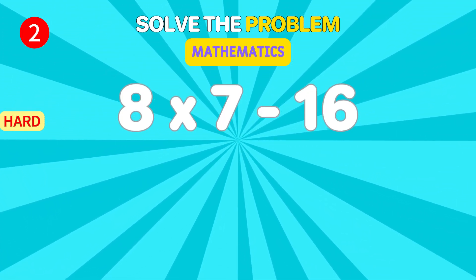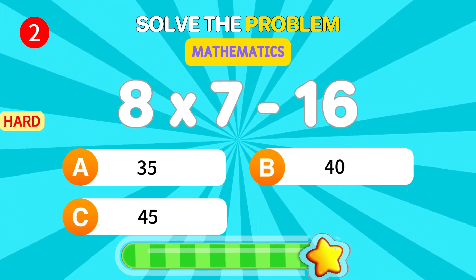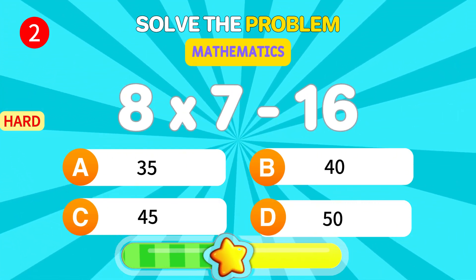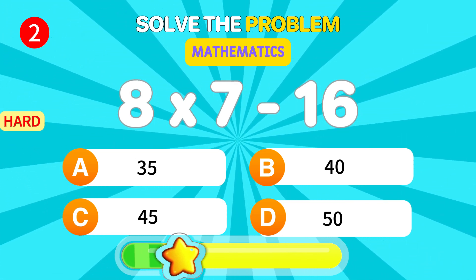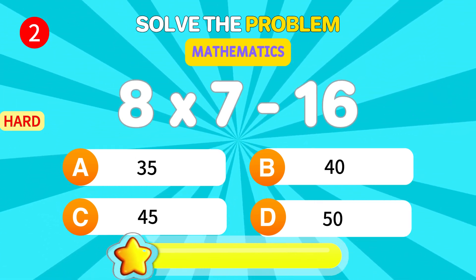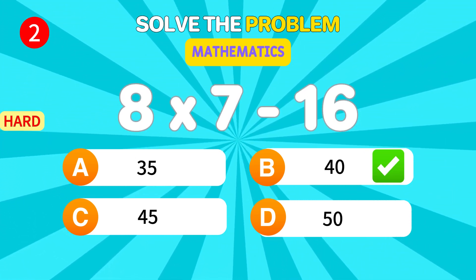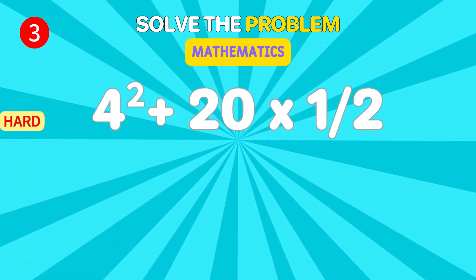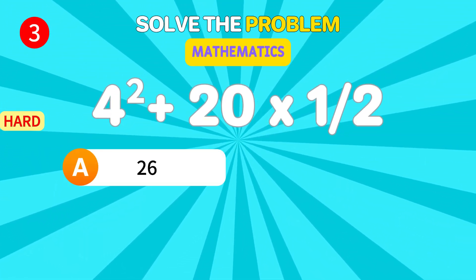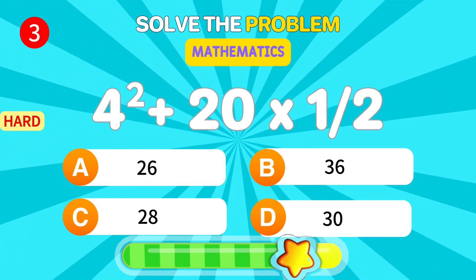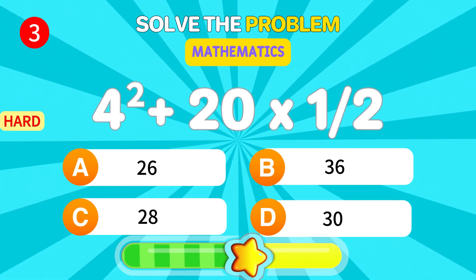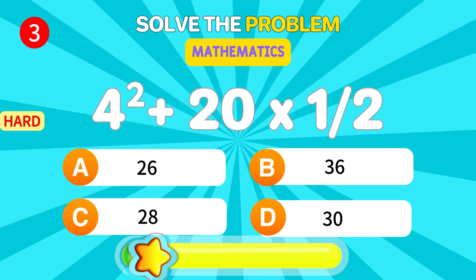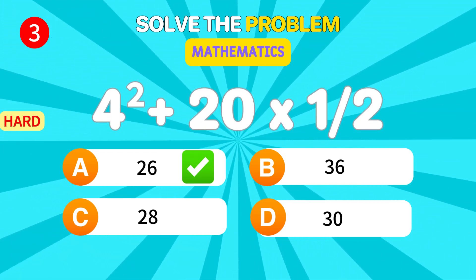Multiply 8 times 7, then subtract 16. 40. Brilliant. What's the square of 4? Add half of 20. 26. Outstanding.